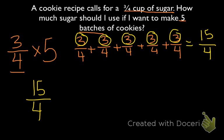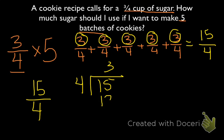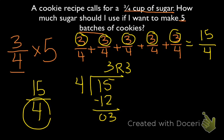The last thing you want to do is change 15 fourths from an improper fraction to a mixed fraction. So we'll use long division. 15 divided by 4: 4 goes into 15 three times, because 4 times 3 is 12. Take the difference: 15 minus 12 is 3. Our remainder is 3, and our old denominator is 4. So for 5 batches of cookies, I'm going to use 3 and 3 fourths cups of sugar.